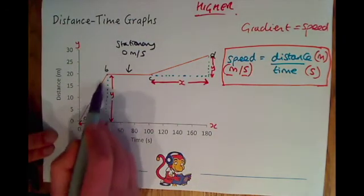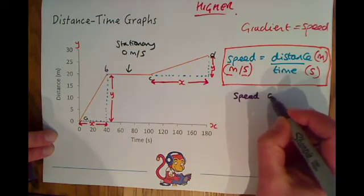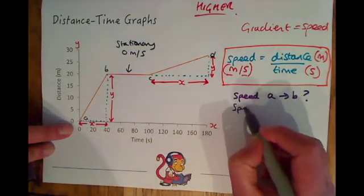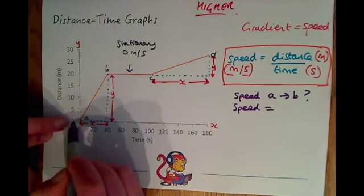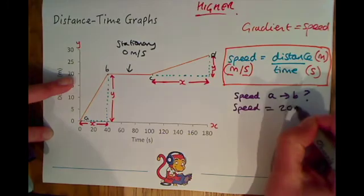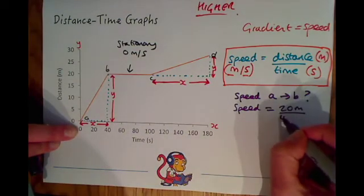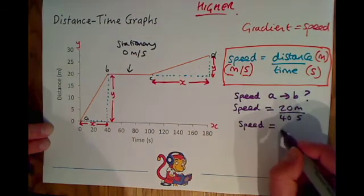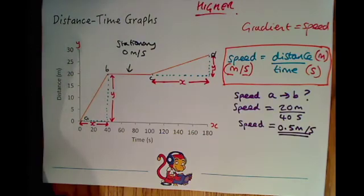Remembering that this is the y-axis and this is the x-axis, let's have a look at this gradient of this line first between a and b. What is the speed between a and b? Speed equals distance divided by time. The distance here between 0 and 20 is 20 meters, so 20 meters divided by the time which we look at here which is 0 to 40 which is 40 seconds. So our speed: 20 divided by 40 which is 0.5 meters per second. Don't forget your units, they're often two marks. One for the answer and one for the units.